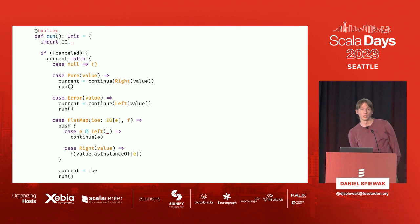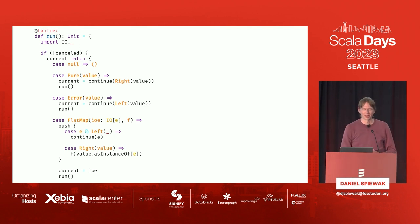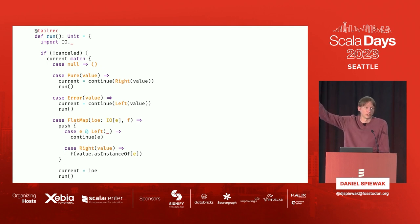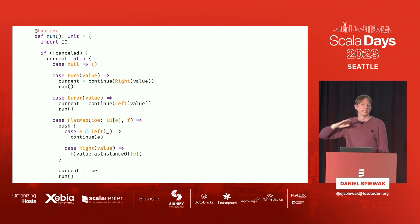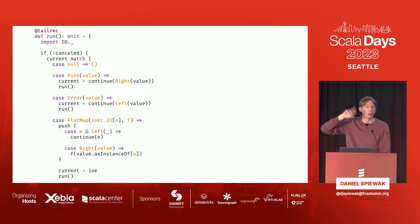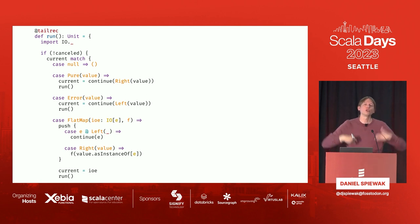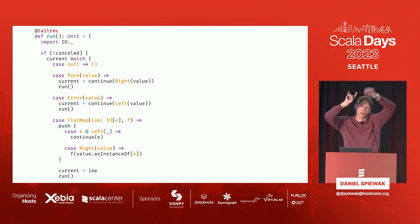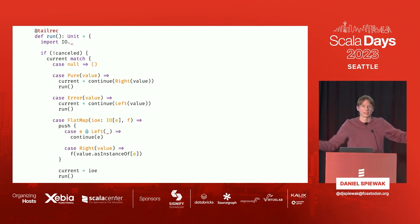IOFiber implements Runnable so we can just submit it to an executor. The run method takes current and pattern matches on it. If current is null, that's a termination signal — stop running. If current is Pure, we have a value and give it to the continuation, which gives us the next IO, and then we loop around on run. If that was the last thing to do, the next IO will be null and we stop. Same thing for errors, same thing for flatMap. When flatMap is encountered, it pushes a continuation onto the stack — the function you pass to flatMap becomes a continuation that says: I got a value, now give me the next IO.